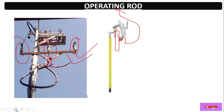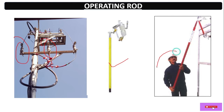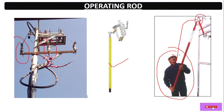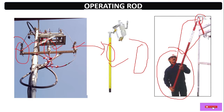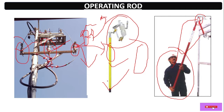This is the view of the operating rod. As you can see, this person is operating the DO fuse with the operating rod. During maintenance of the transformer we can disconnect the DO fuse with the help of this rod. In case of a fuse blown out during any fault, we can take out the DO tube, replace the fuse element, and reinstall it with the operating rod.